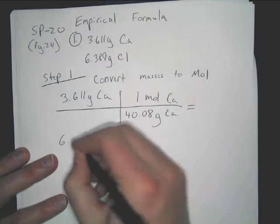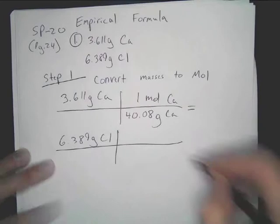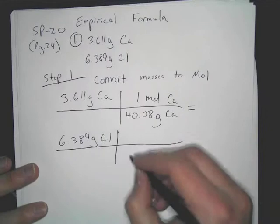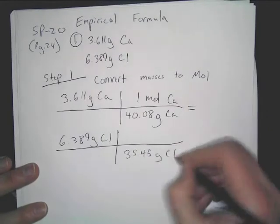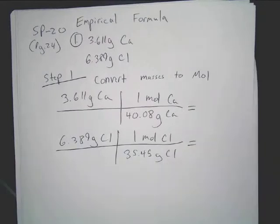Preferably be neat, too. Stay organized because you're going to have to use the data you're getting here. Chlorine is 35.45 grams off the periodic table. Now, what do these numbers come out to be?